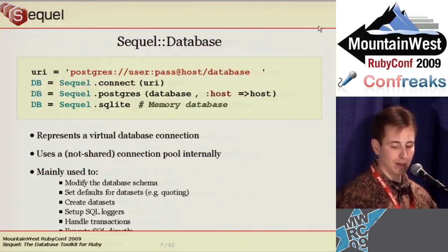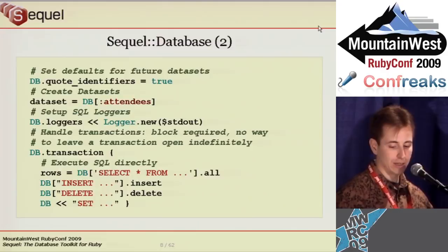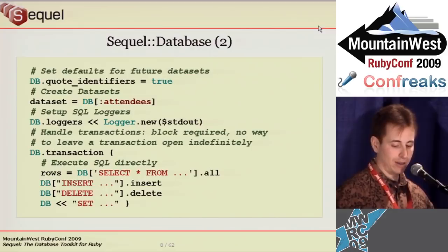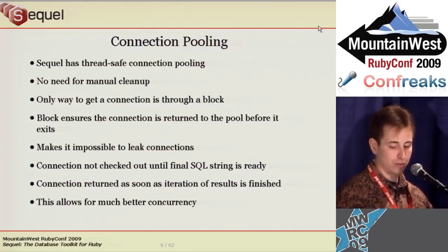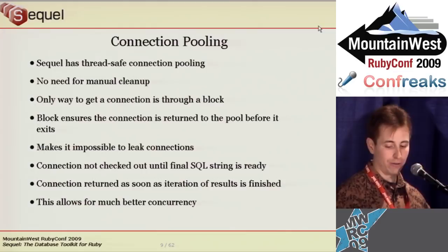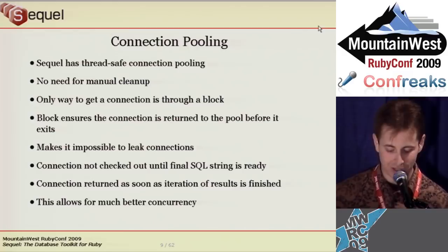After requiring Sequel, you should create a database object via the connect method. The convention for an application using a single database is to store the database object in a constant named DB. The main use for this object is creating dataset objects for queries, but it also handles transactions, default dataset settings, and SQL loggers. The transaction method ensures all database access inside the block uses the same connection inside a database transaction. Each database object has a separate thread-safe connection pool, designed for high concurrency — Sequel checks out a connection only when the final SQL string is ready, and returns it as soon as iteration finishes.